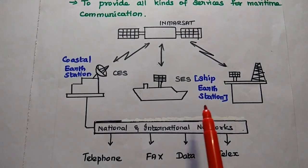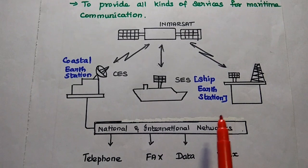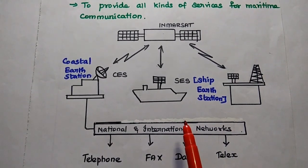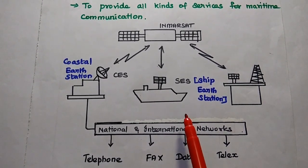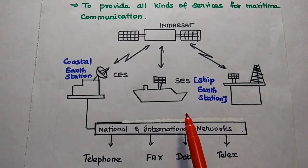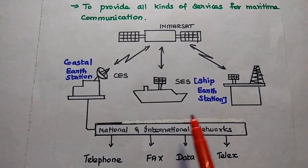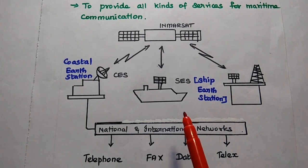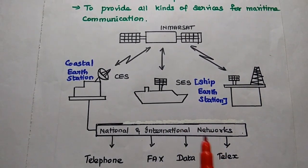SES — the Ship Earth Station — is in a moving condition. Users on the ship can use satellite phones, fax, and data terminals to make the connection between the ship and the coastal areas.